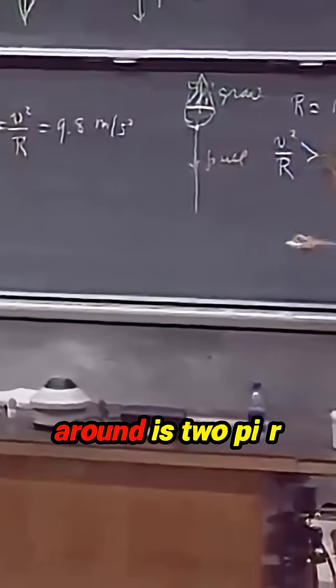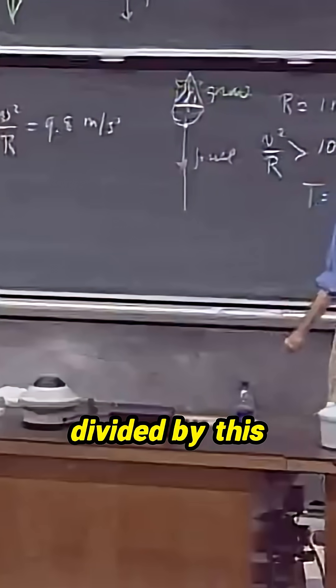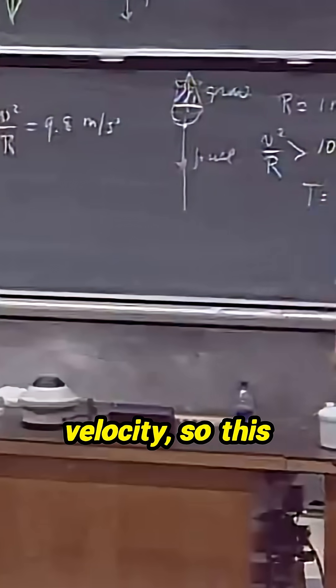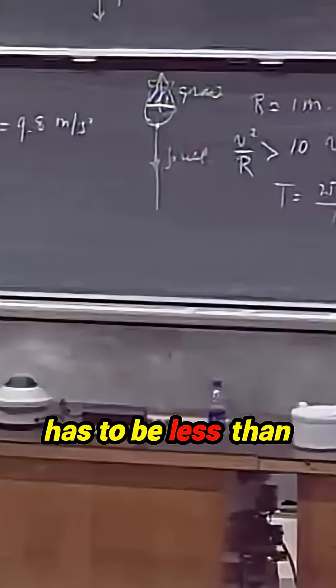The time to go around is 2 pi r divided by this velocity, so this time to go around then has to be less than two seconds.